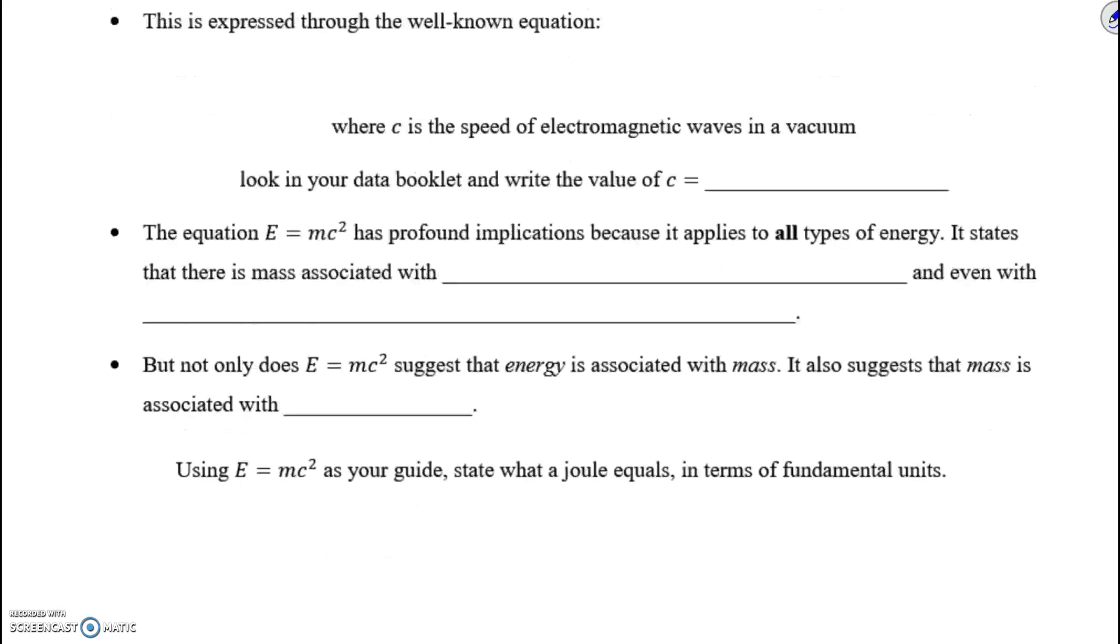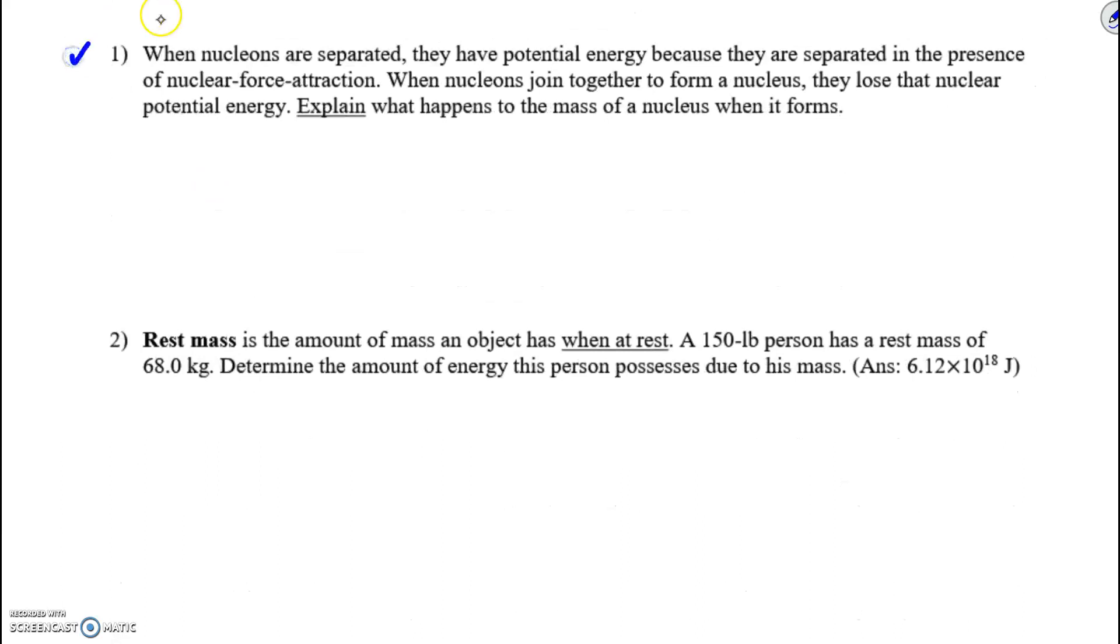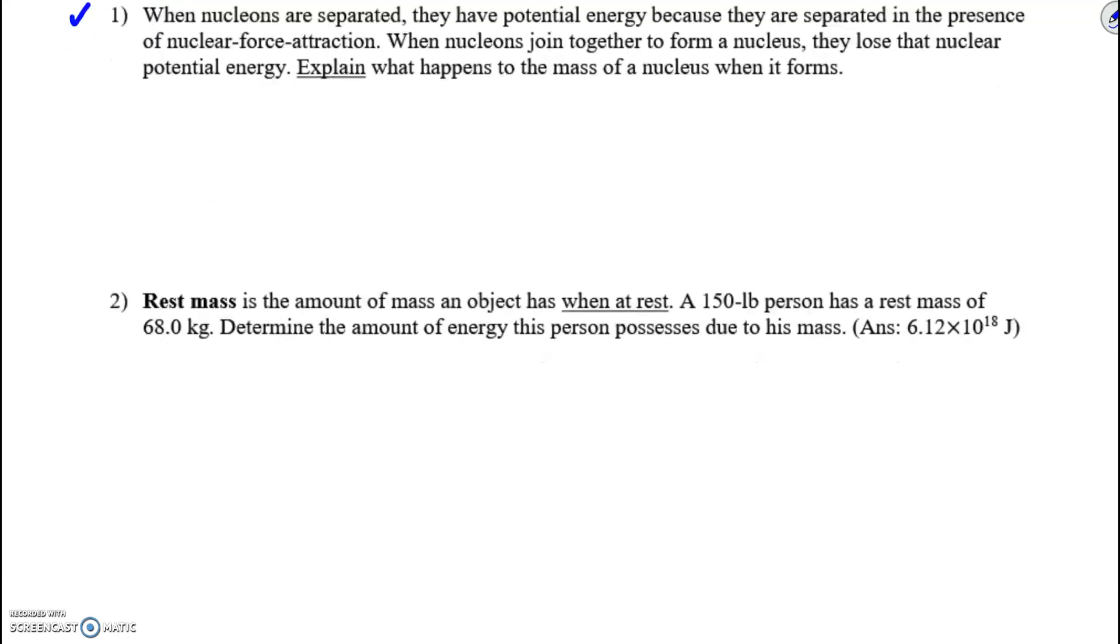Let's see a problem. We're going to skip down. So go ahead and answer number 1. 150 pound person has a rest mass of 68 kilograms. Determine the amount of energy this person possesses due to his mass. Well, can I just use 931.5 MeV per u? Well, we're given the mass in kilograms, and we're going to calculate the energy in joules. So whenever you're going from kilograms to joules, you use E equals mc squared, and you plug in the value. So plug in the mass, plug in the c squared, the value of c, square it, and calculate the energy in joules.